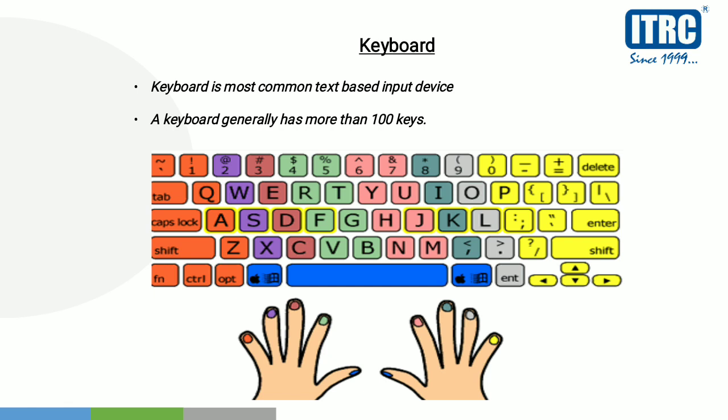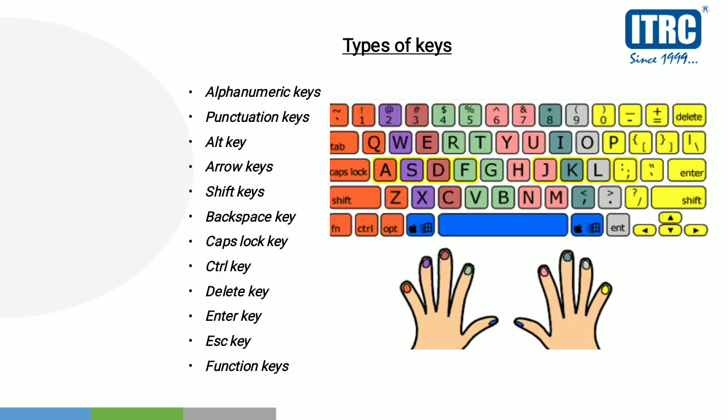This keyboard has more than 100 keys. These are the types of keys: alphanumeric keys, punctuation keys, Alt keys, arrow keys, Shift keys, Backspace key, Caps Lock, Control key, Delete key, Enter key, Escape key, and function keys. You can see all of these on screen.